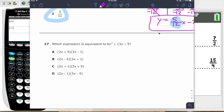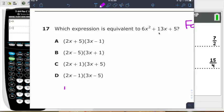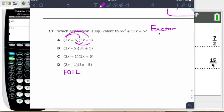Next problem here. Which expression is equivalent to 6x squared plus 13x plus 5? So two different ways we can do this. We can factor this expression, and I'll show you how I teach factoring. Or we can take these and multiply these two binomials using FOIL. First times first, outside times outside, inside times inside, last times last. We can FOIL all the answers together, see if that matches, or factor the expression from the beginning.